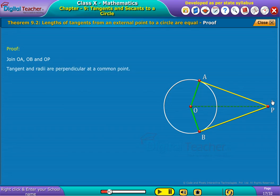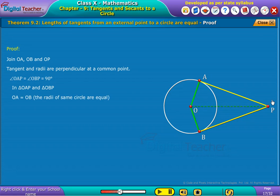As per theorem 9.1, tangent and radii are perpendicular at a common point. Angle OAP is equal to angle OBP is equal to 90 degrees. In triangle OAP and triangle OBP as radii of same circle is equal, we write as OA is equal to OB.